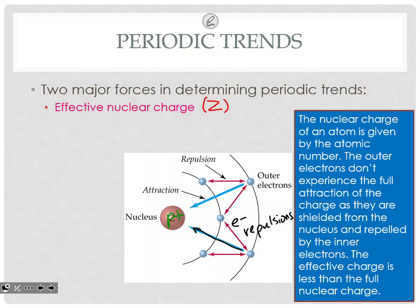So the protons are going to be attracting the electrons in. If you have more protons, you have more attractive force. The nuclear charge of an atom is given by the atomic number. The outer electrons don't experience the full attraction of the charge, as they are shielded from the nucleus and repelled by the inner electrons. The effective nuclear charge is just slightly lower than its overall proton number — slightly less than that — having to do with subtracting out a little bit of the electron repulsions.